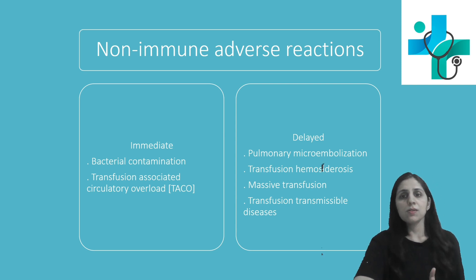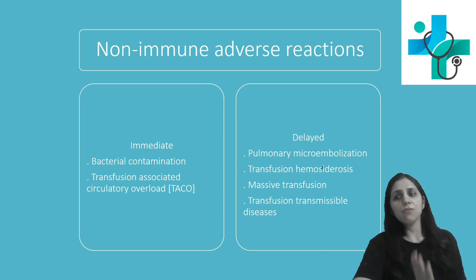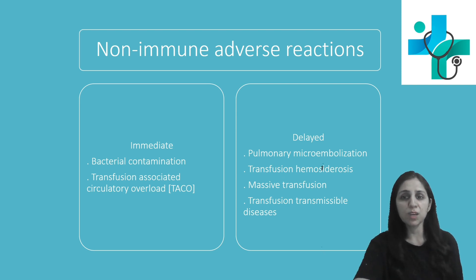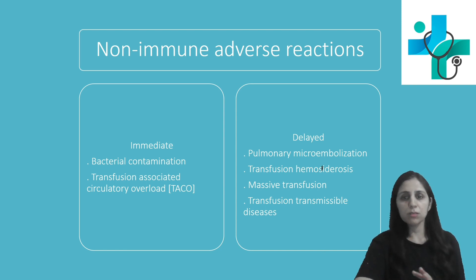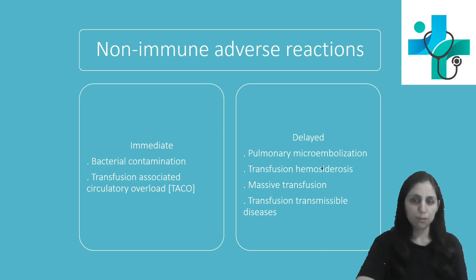The second delayed non-immune reaction is transfusion hemosiderosis or iron overload. It is usually seen due to repeated blood transfusions in the absence of any blood loss — for example, in patients with thalassemia major or severe chronic refractory anemias requiring repeated transfusions. One unit of whole blood contains 250 mg of iron, so approximately after 100 units of blood transfused, iron overload organ damage develops.